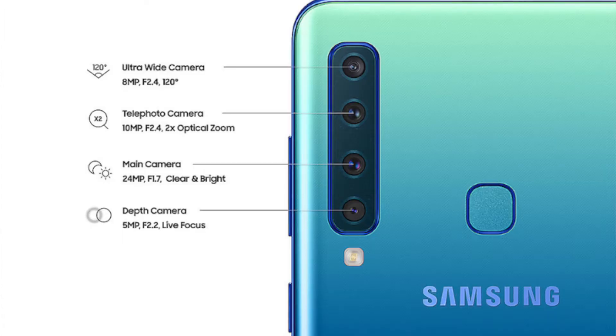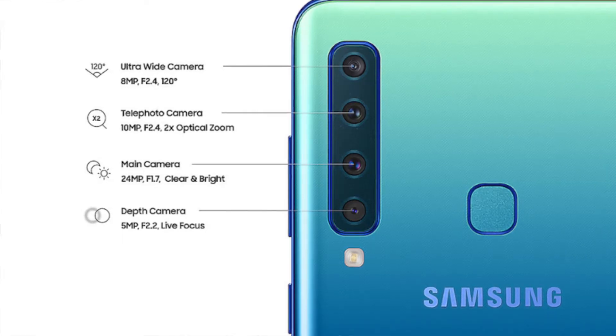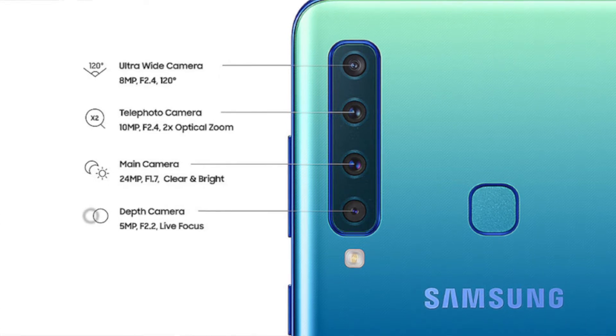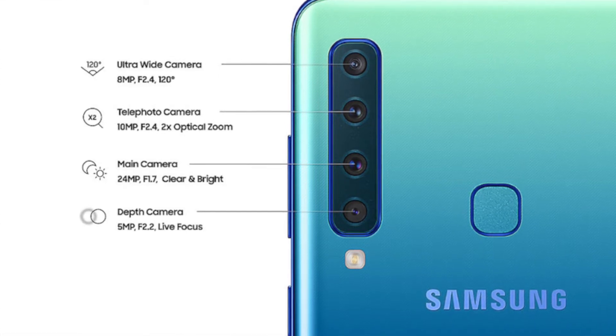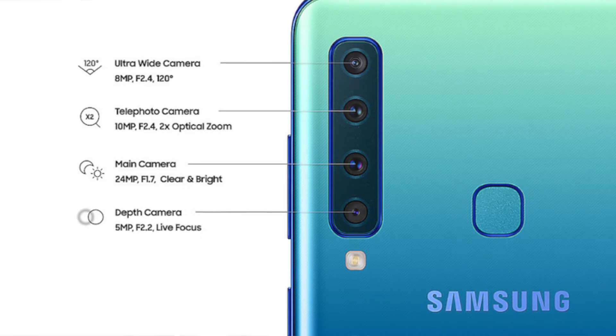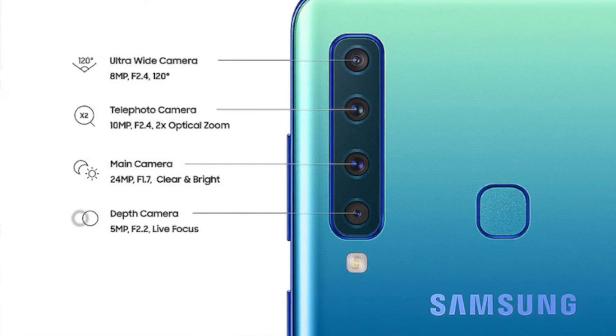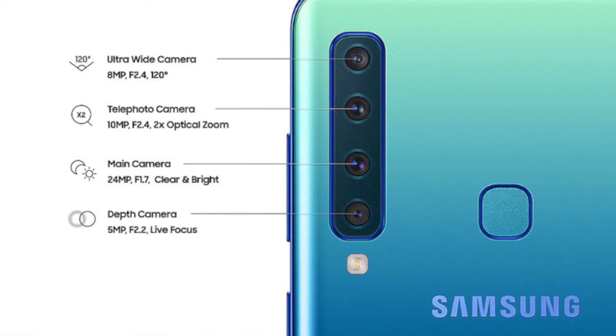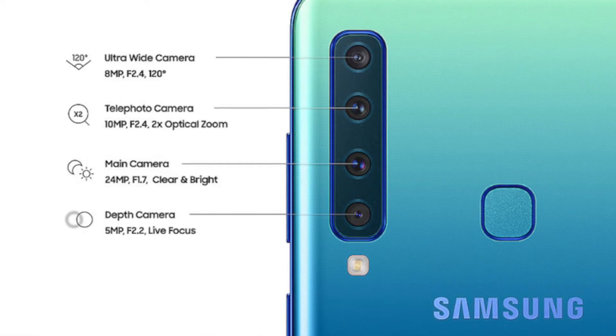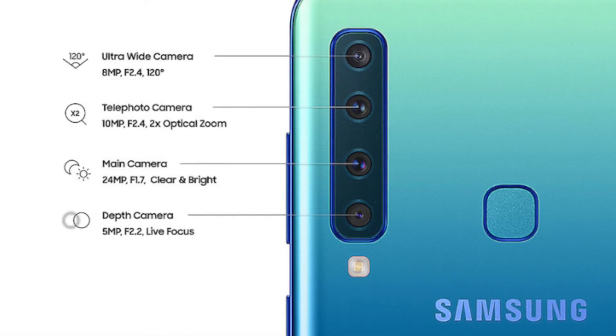Now let's talk about specifications, starting with cameras. The primary camera is 24MP with a focal aperture of f/1.7. After this comes a 10MP telephoto sensor with 2x optical zoom, with a focal aperture of f/2.4. After this comes an 8MP ultra-wide sensor with a 120-degree lens, meaning the frame is wider with this camera.